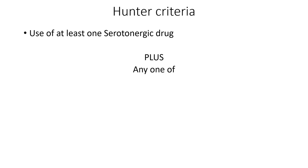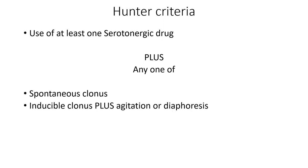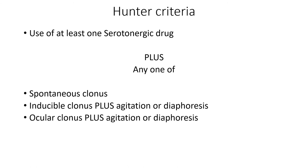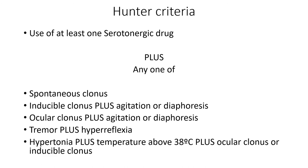We use the Hunter criteria as the most effective diagnostic system. It requires the use of at least one serotonin-affecting drug, plus any one of: spontaneous clonus; inducible clonus with agitation or sweating; ocular clonus; tremor and hyperreflexia; or hypotonia and hypothermia with one of these clonus features. If you suspect it, look this up and see if things fit. It's quite specific but not the most sensitive — about 85% sensitivity — so by no means definitive.